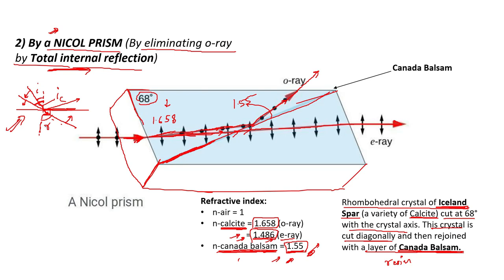You can see that this was the unpolarized light which passed through the Nicol Prism, and it is divided into two rays — both vibrating perpendicular to each other and in a single plane. As the O-ray is eliminated, there is only the E-ray left, which is vibrating in a single particular plane. This means that the ray is polarized.